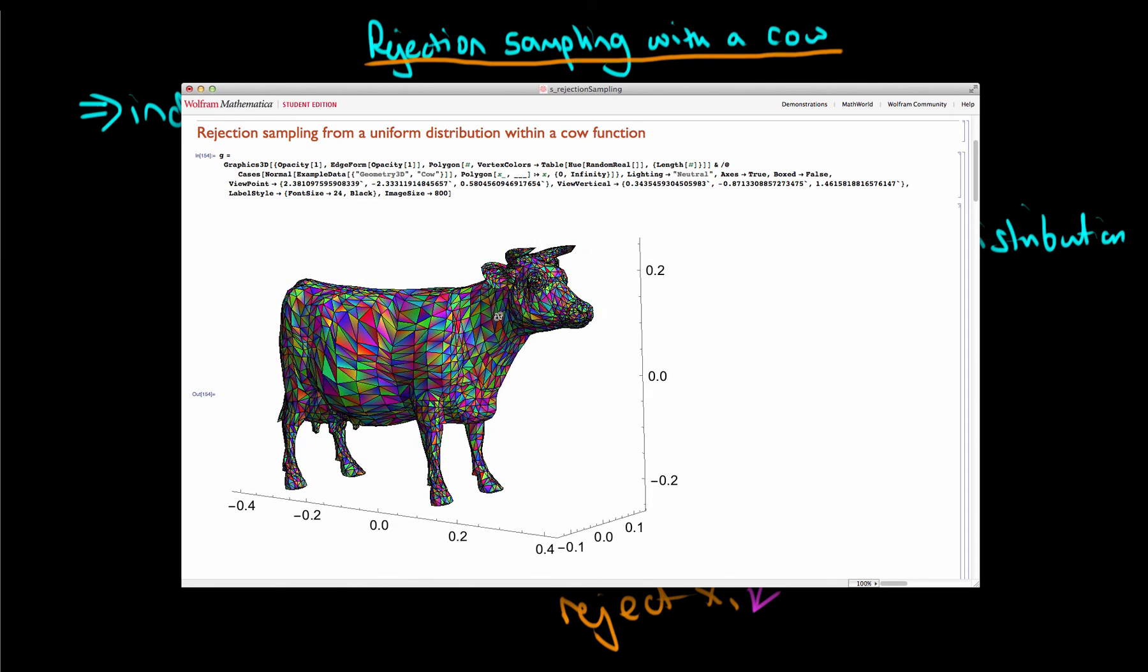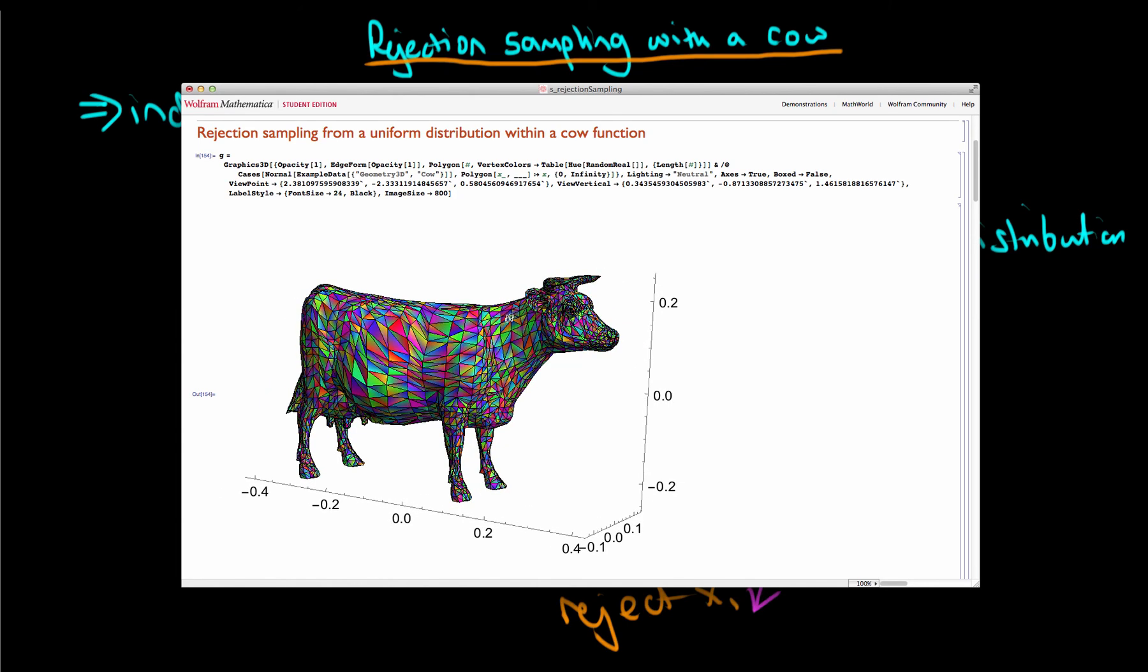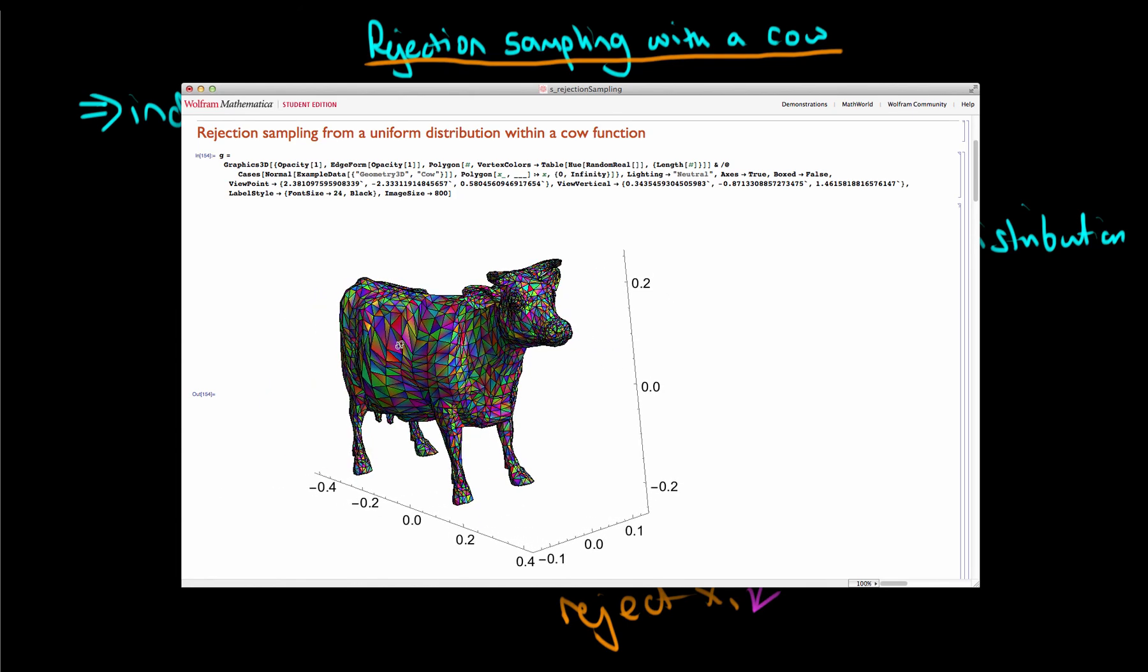And to use rejection sampling we just accept that sample if the point lies within the cow's boundaries and reject it otherwise.